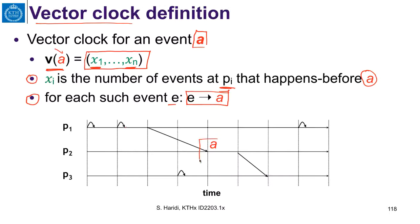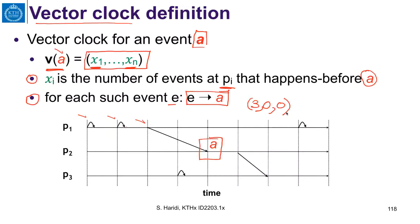Let us observe this in the diagram. Here is our event A. X1 is the number of events that happen before A on P1, and this is 1, 2, and 3. Event A itself occurs at P2, and the number of events that happen before A on P2 is 0. And for P3, none of the events are causally related because P3 did not yet communicate with P2, so it is also 0.